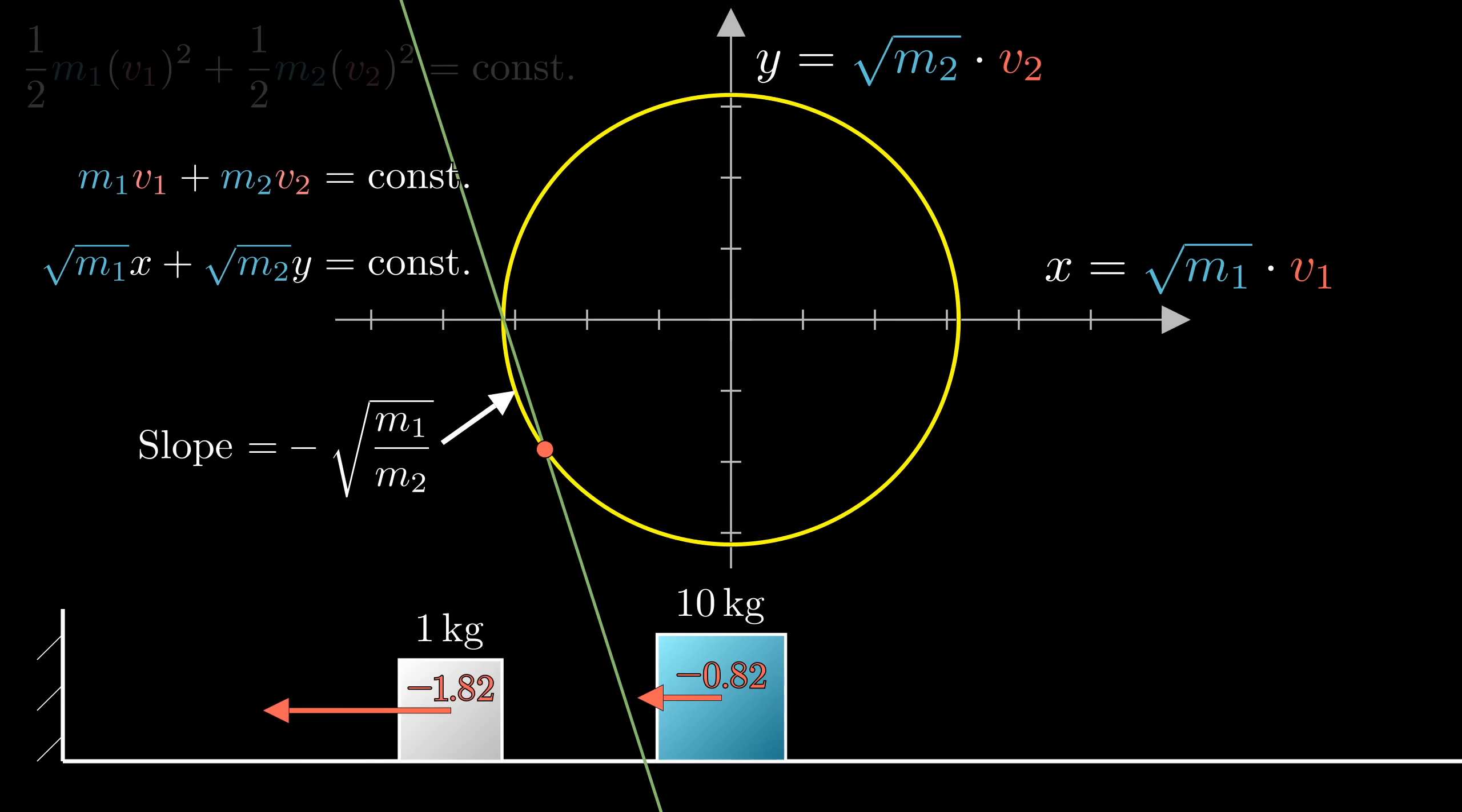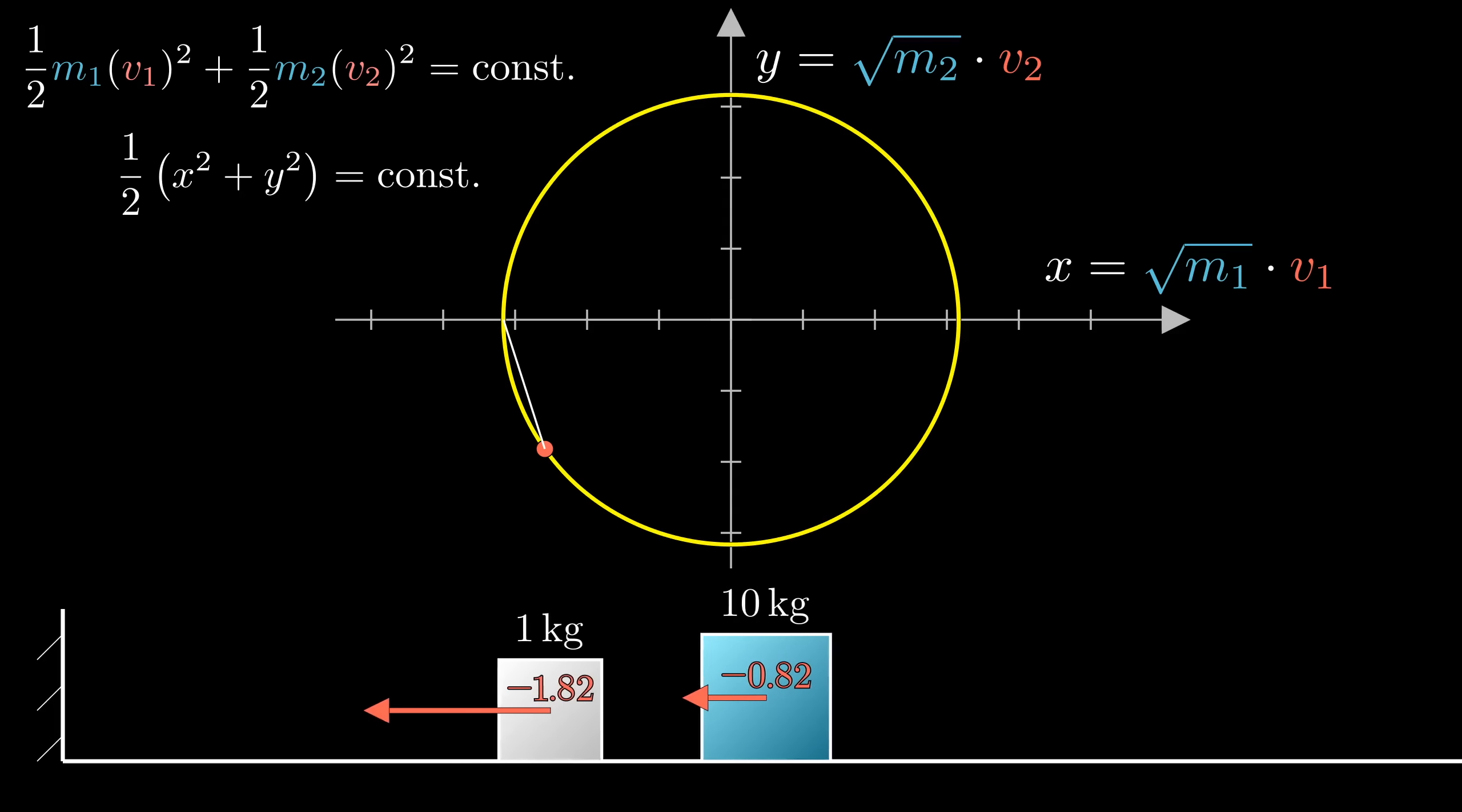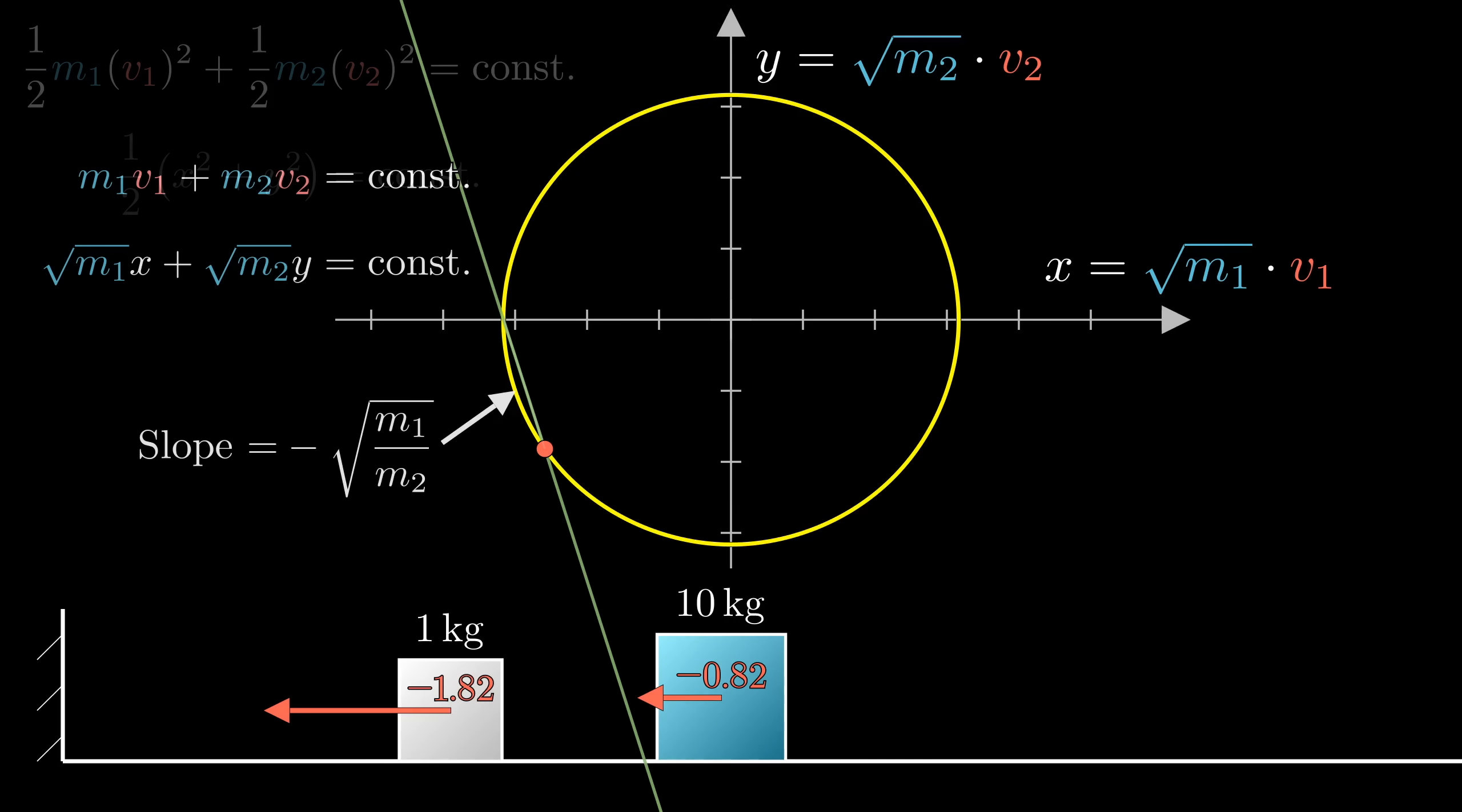So just to be clear about what all this is saying, all other pairs of velocities which would give the same momentum live on this line, in just the same way that all other pairs of velocities that give the same energy live on this circle. So notice, this gives us one and only one other point that we could jump to. And it should make sense that it's something where the x-coordinate gets a little less negative, and the y-coordinate becomes negative, since that corresponds to the big block slowing down a little, while the little block zooms off towards the wall.